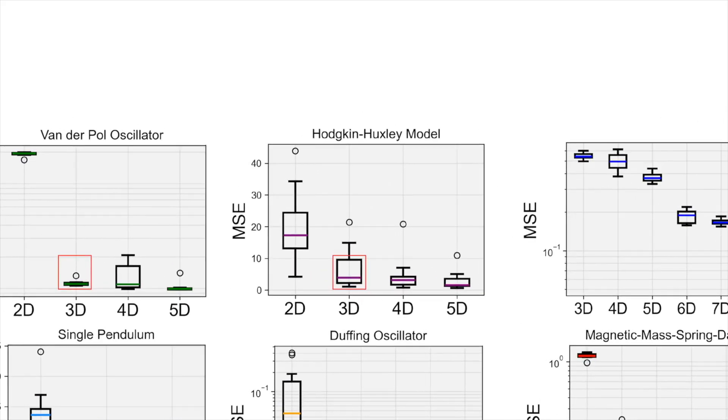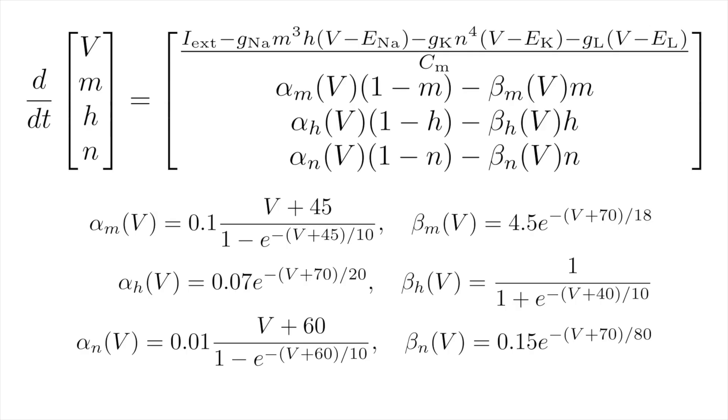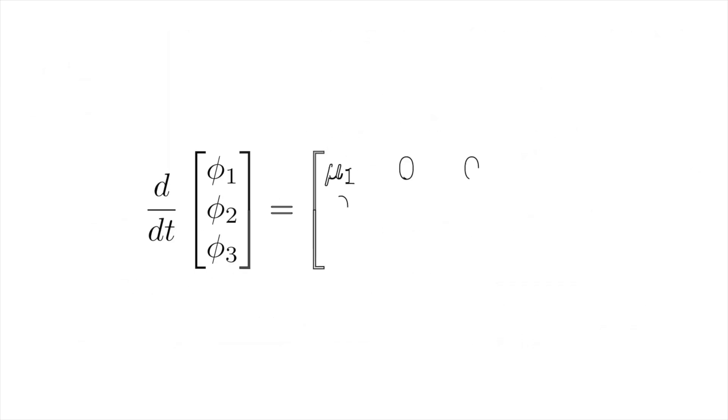Using this method, for the first time, we can reduce the dimensionality of the model while providing a global linearization. To make this more concrete, we can replace the original 4D nonlinear system with this 3D linear system and make accurate long horizon predictions.